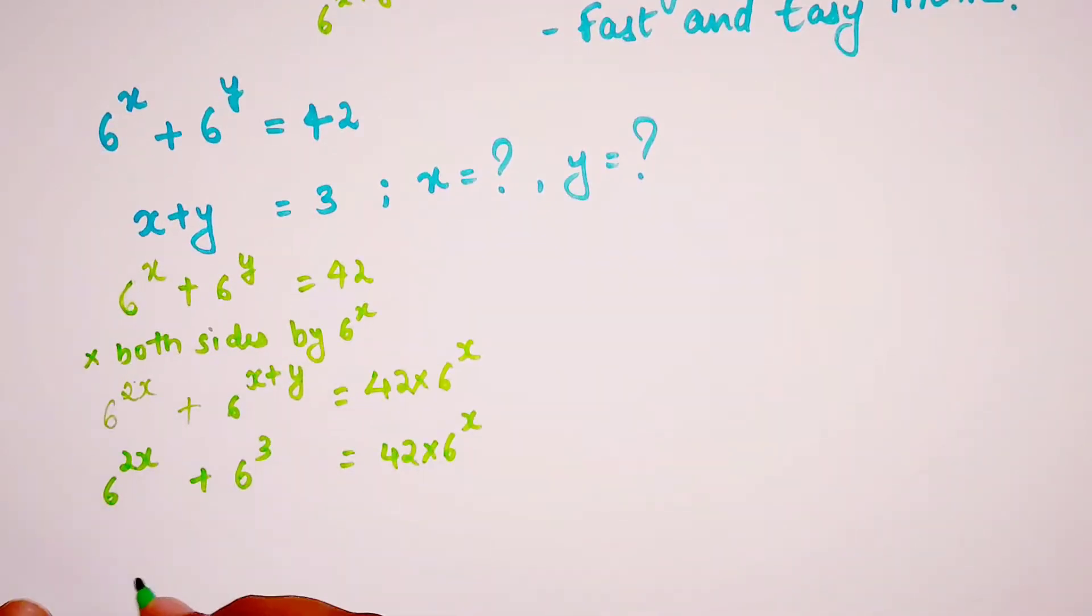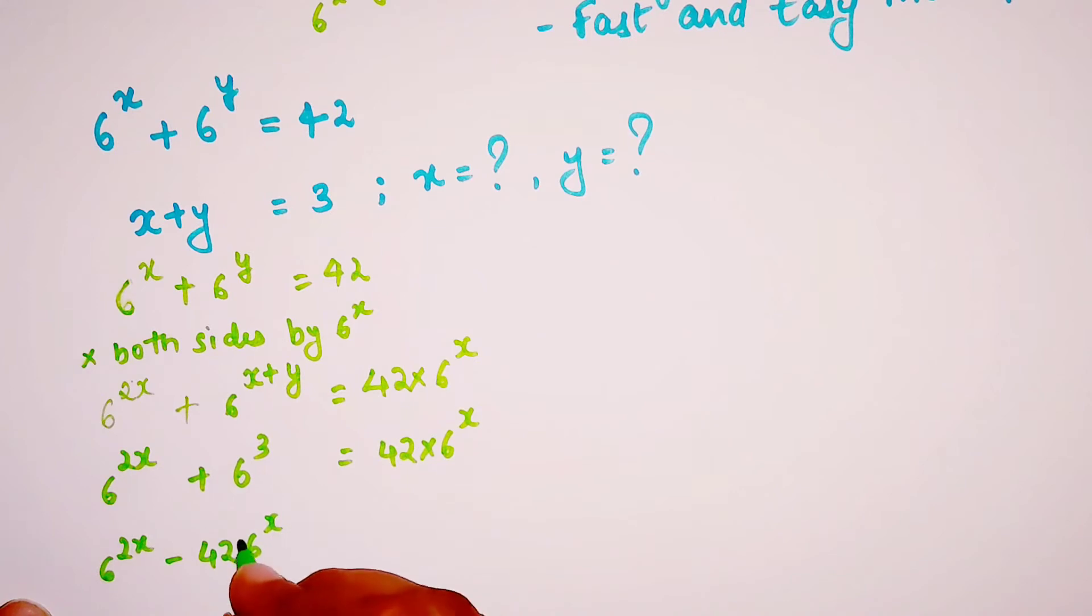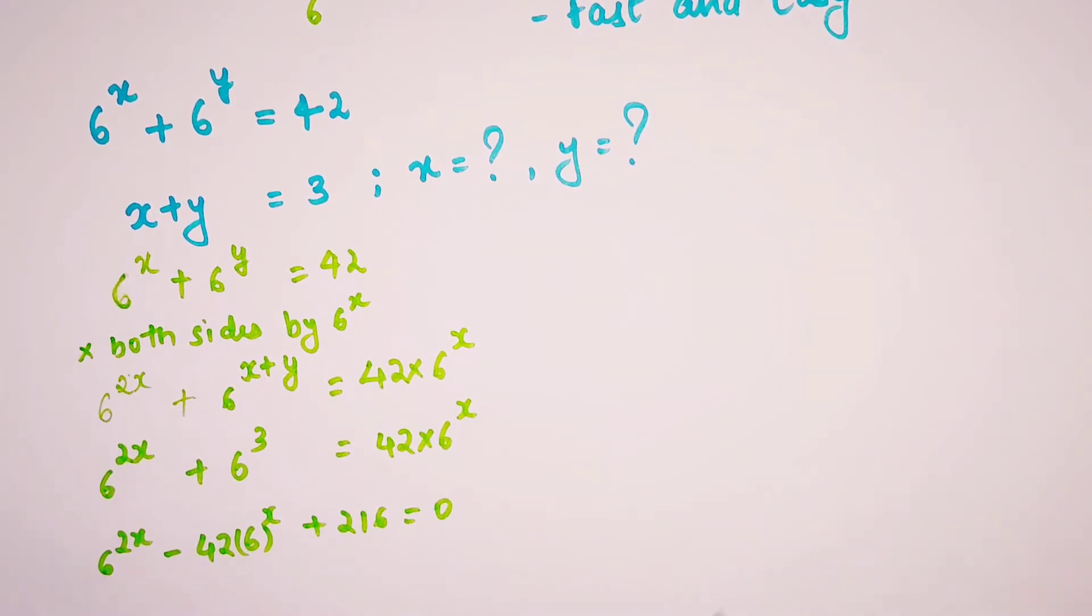Now let's shift everything to one side. I get 6^(2x) - 42 · 6^x + 216 = 0. Now you might be wondering why I said quadratic, but if you look, this looks exactly like a quadratic equation.